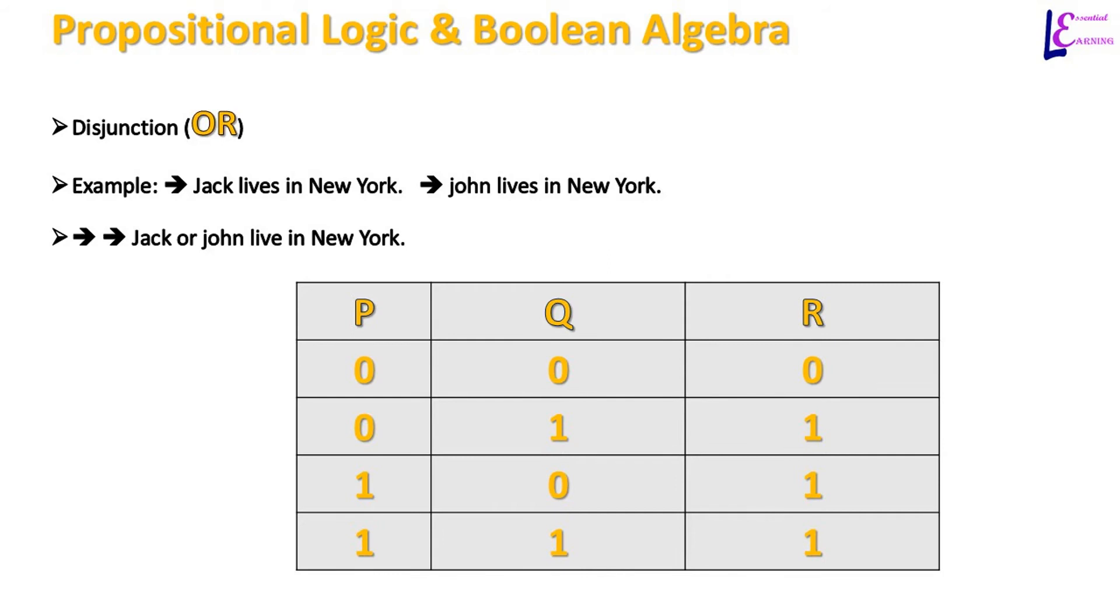In a proposition with distinction or OR operation, if one or more than one statement is true, proposition will be true. For example, proposition Jake or John live in New York will be true if both or one of them is living in New York. If none of them is living in New York, statement will be false. In terms of boolean algebra, if P and Q, P or Q are both 0, result will be 0, otherwise result will be 1.